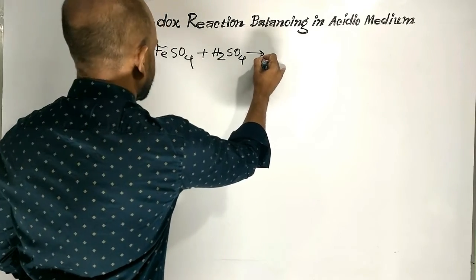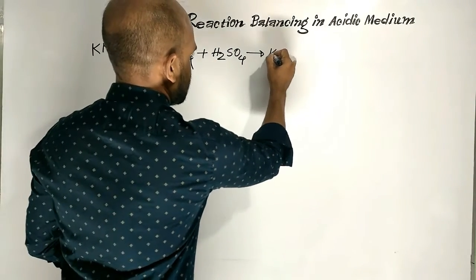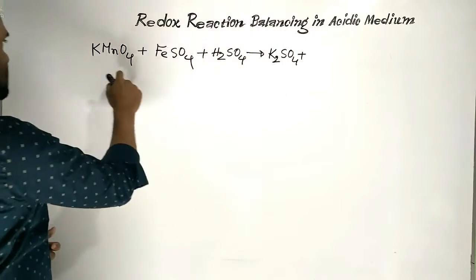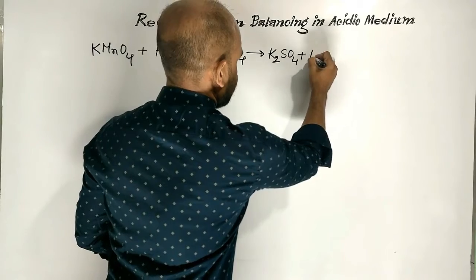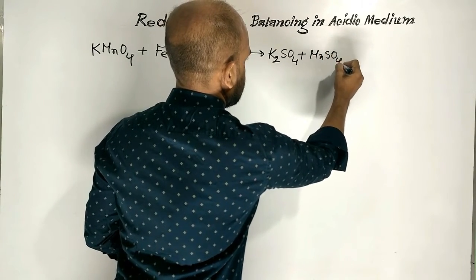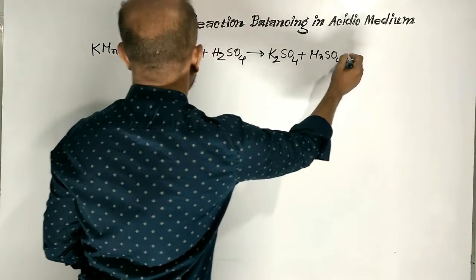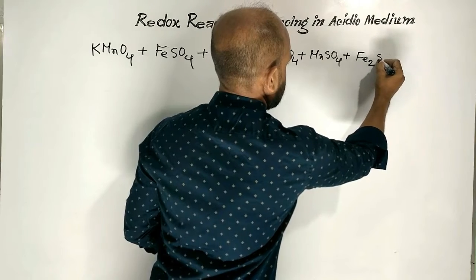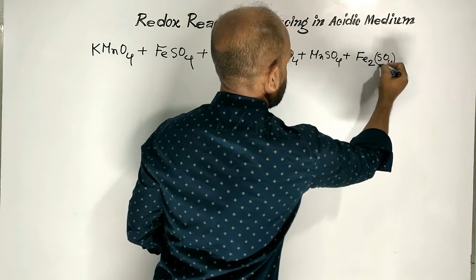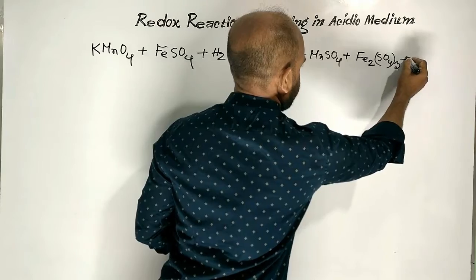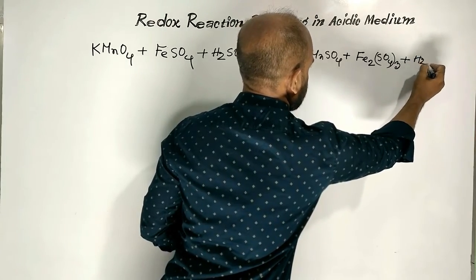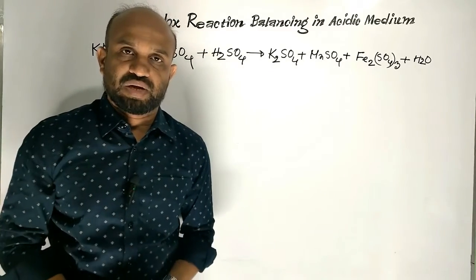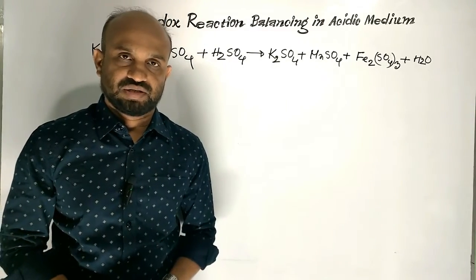The products are Potassium Sulphate, then Manganese Sulphate, plus Ferric Sulphate, and finally Water. This is the Redox Reaction of Potassium permanganate and Ferrous Sulphate in Acidic Medium.